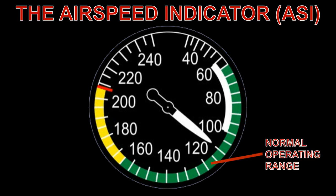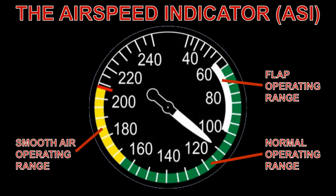For instance, the green arc indicates the normal operating range of the aircraft. The white arc indicates the flap operating range, used for approaches and landings. The yellow arc cautions that flight should be conducted in this range only in smooth air, while the red line at the top of the yellow arc indicates damage or structural failure may result at higher speeds.